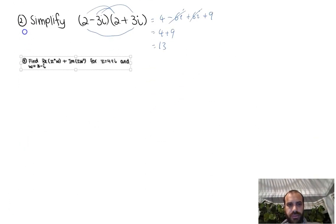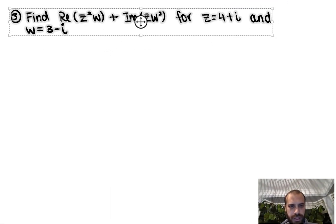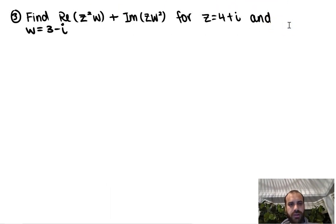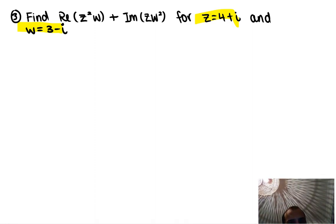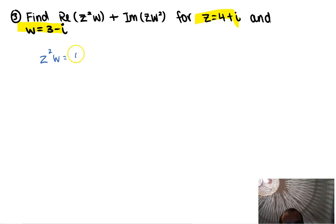I'm going to do a third one that will take a little bit of work, so I'm going to zoom in. Find the real part of z squared w plus the imaginary part of z w squared for these two complex numbers. I'm going to do this in stages. First I'm going to find z squared w, which is z times z times w — so it's 4 plus i squared times w, which is 3 minus i.